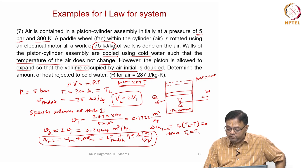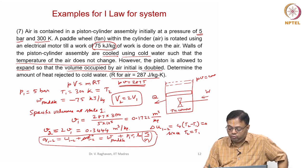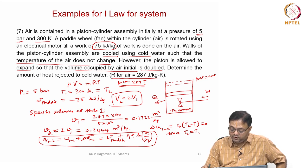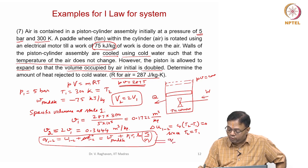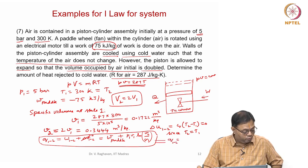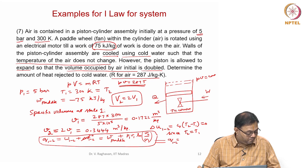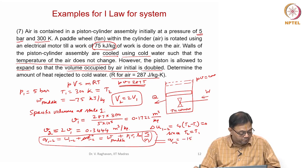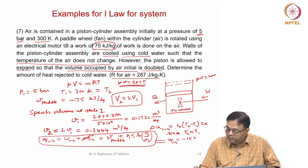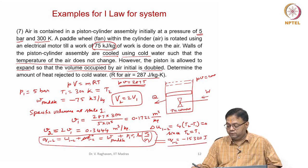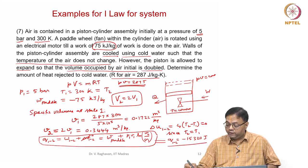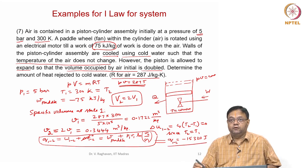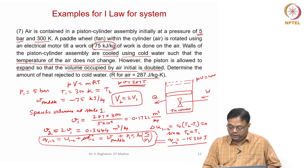Since p1v1 is known and v2/v1 is also known, from this I can find q. The result is q₁₂ = −153,20 joules. Heat is rejected, so there is a negative sign. Work is also coming in from the surroundings, so work is also negative.